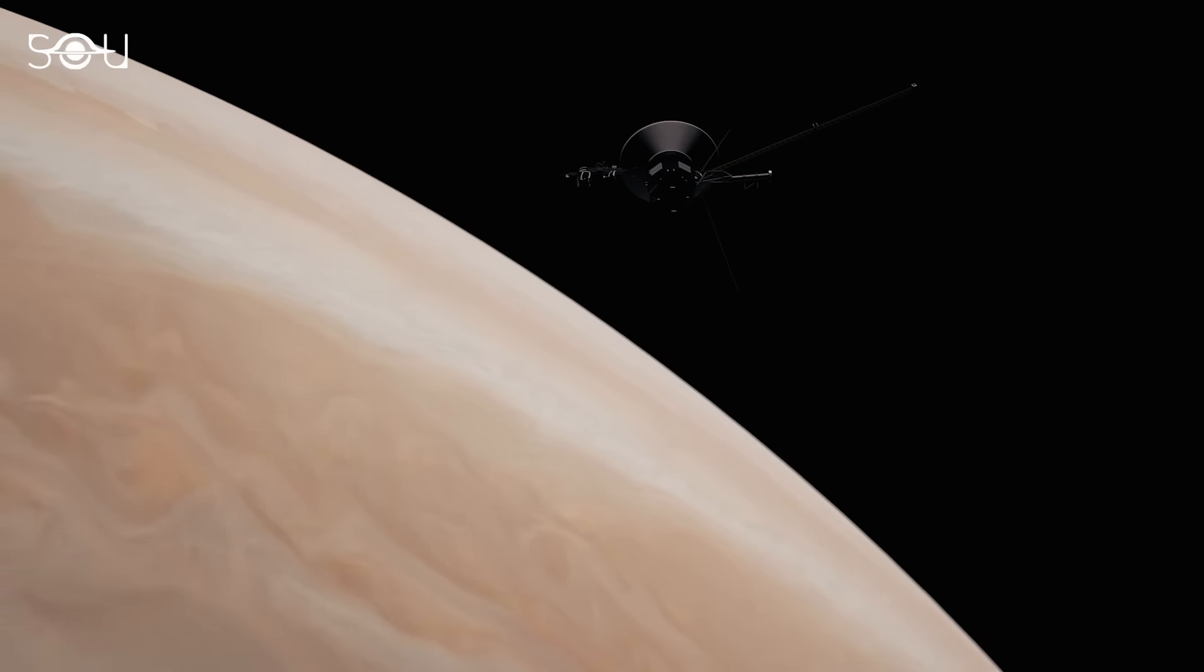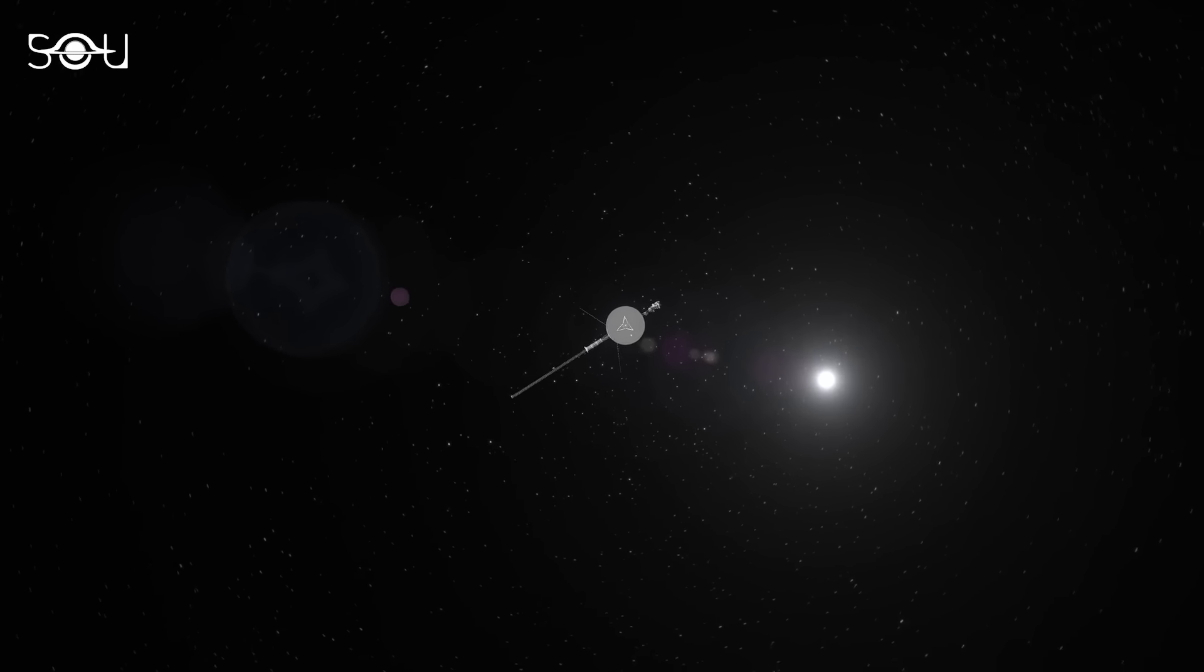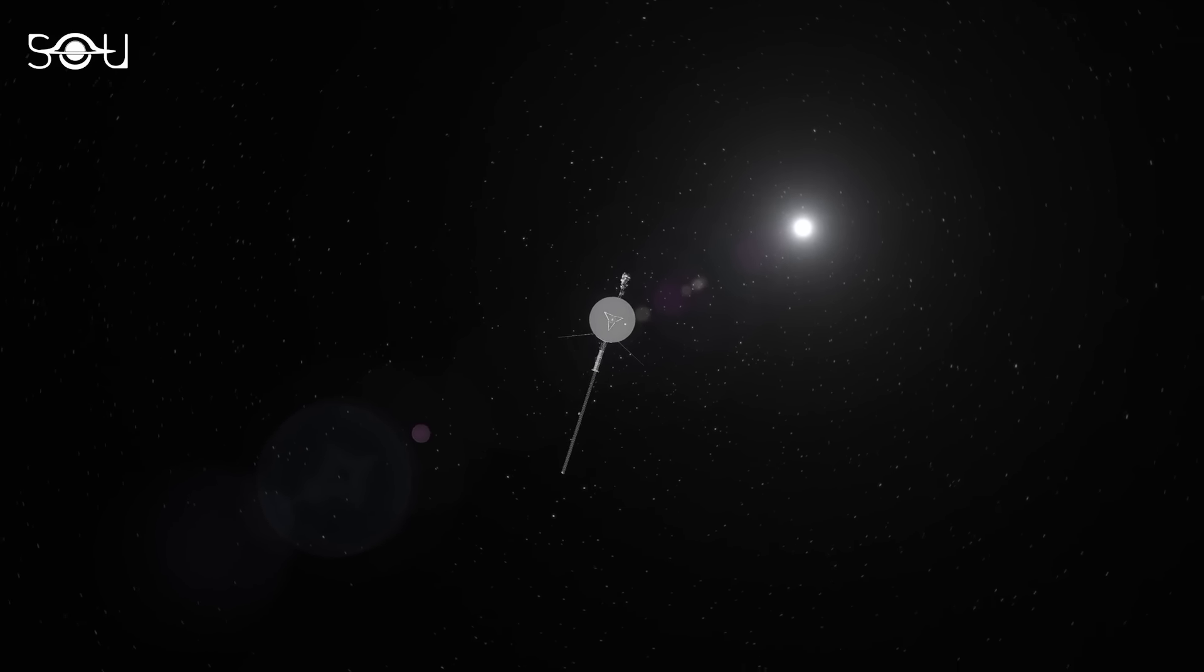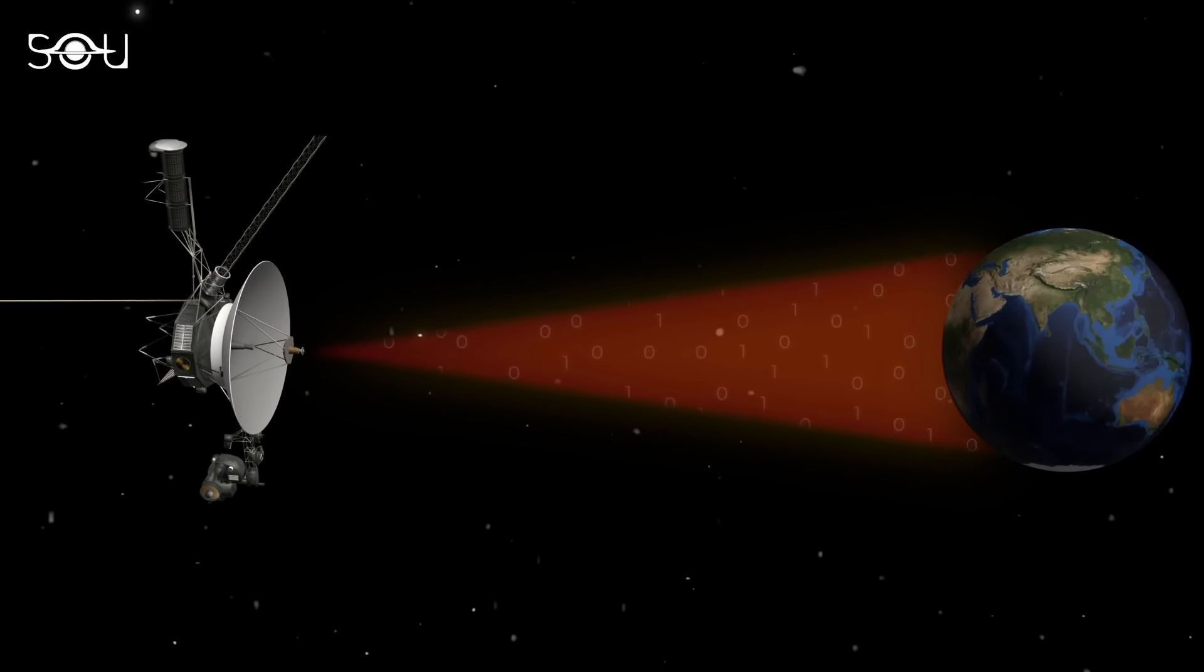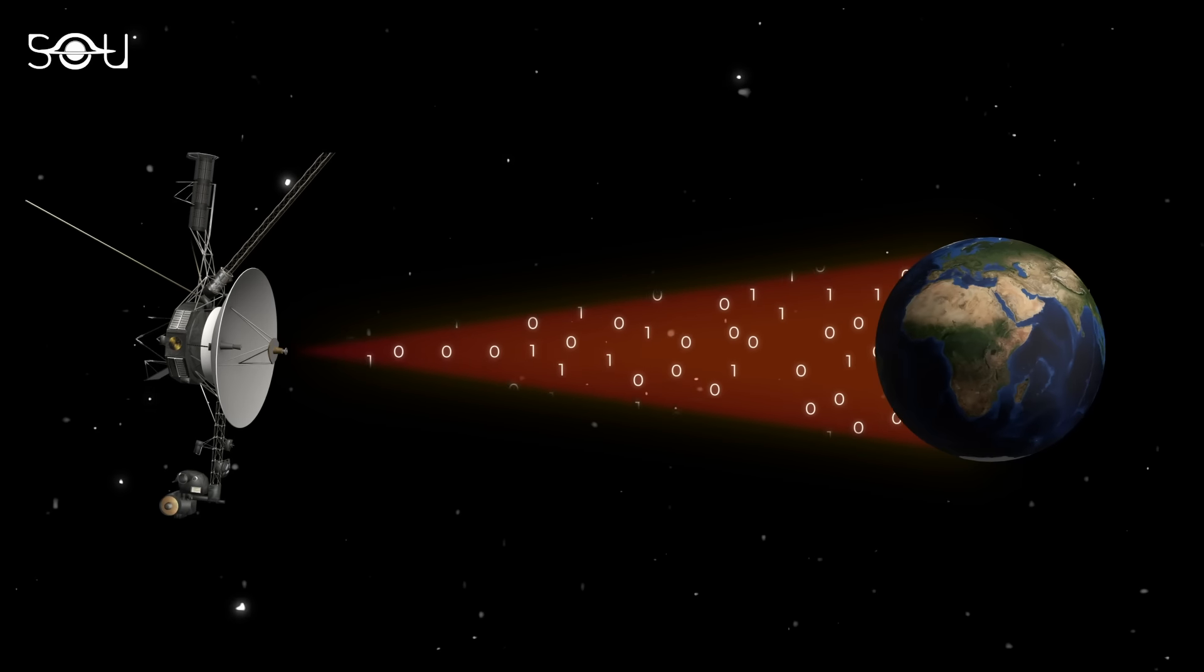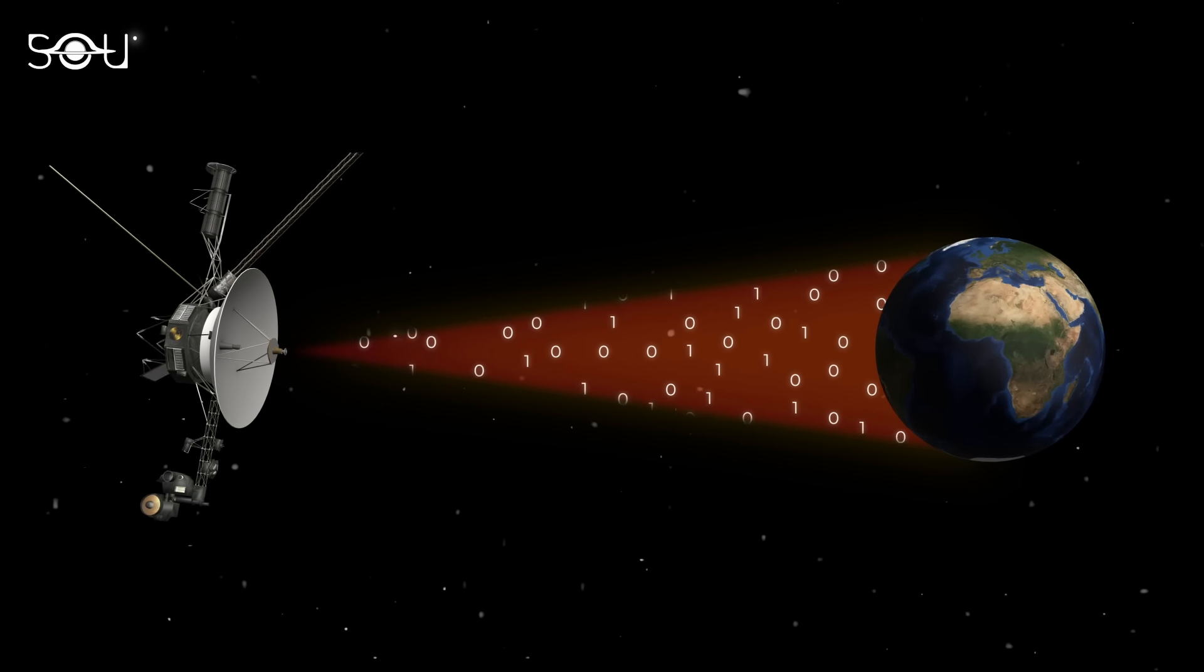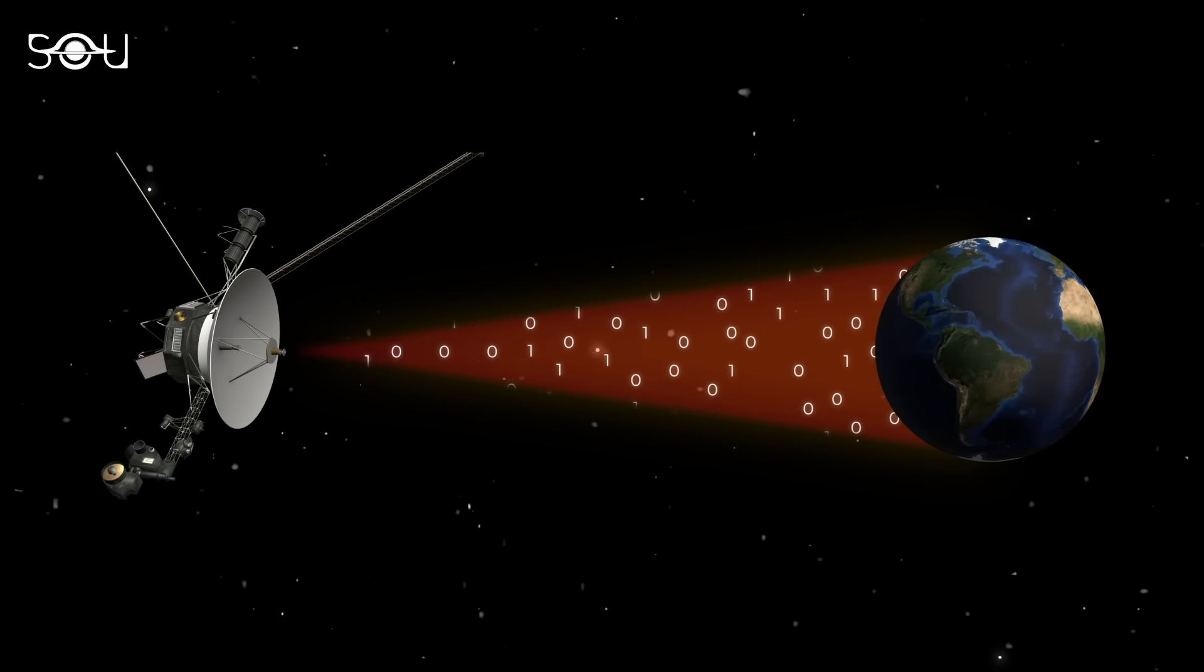For over four decades, Voyager 1 has been sharing information in this manner, but recently, the spacecraft's communication system has witnessed a mysterious problem. Instead of sending the usual mix of scientific information and spacecraft health data, the TMU has been reported to emit a strange and repetitive sequence of ones and zeros that doesn't seem to make any sense.